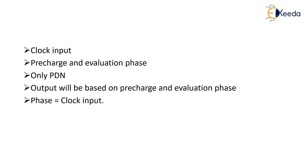In dynamic CMOS we have two extra transistors, and these MOSFETs are controlled by a clock input. The operation of dynamic CMOS is divided into two phases: the pre-charge phase and the evaluation phase. The clock input determines which phase the device is operating in — either the pre-charge phase or the evaluation phase.